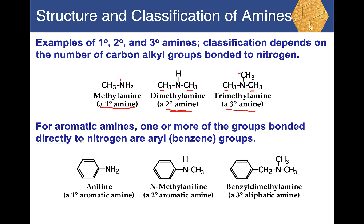There is another classification called aromatic amines. Aromatic compounds typically have a benzene ring. If the group bonded directly to the nitrogen is a benzene ring, it is classified as an aromatic amine. For example, a benzene ring bonded directly to nitrogen is an aromatic amine — commonly known as aniline.